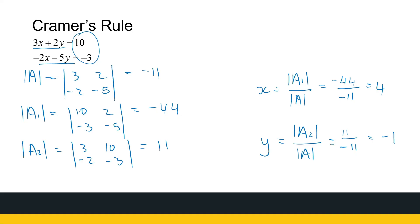Cramer's Rule is very nice to use if you can calculate determinants quickly, but there is a restriction: the coefficient matrix has to be square and the determinant has to be non-zero. Cramer's Rule helps find solutions only when there is a unique solution, whereas Gaussian elimination covers all cases — unique solution, no solution, or infinitely many solutions. Cramer's Rule can only be used when a unique solution exists, tested by finding a non-zero determinant of the coefficient matrix. But that is Cramer's Rule — some nice mathematics to solve systems of linear equations.